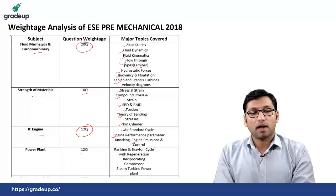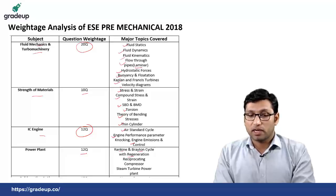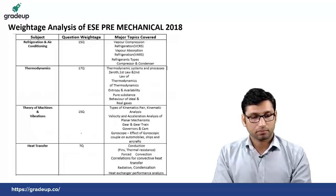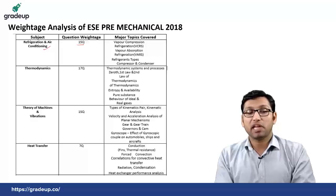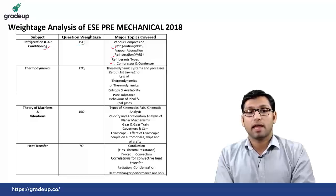From power plant there were totaled 12 questions from Rankine and Brayton cycle with regeneration, reciprocating compressor and steam turbine power plant. In refrigeration and air conditioning there were 15 questions in 2018 prelims paper 2, from vapor absorption, vapor compression, refrigeration types, and compressor and condenser.